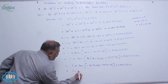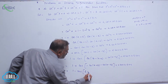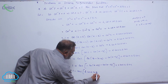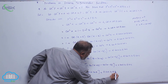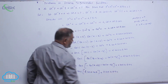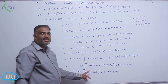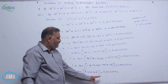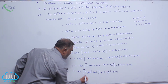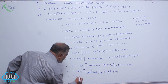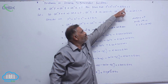This simplifies to 1 minus cos C times 2 cos A cos B cos C plus 2 cos A cos B cos C. The two terms with 2 cos A cos B cos C cancel each other, leaving 1, which is the RHS. That is what we needed to prove.